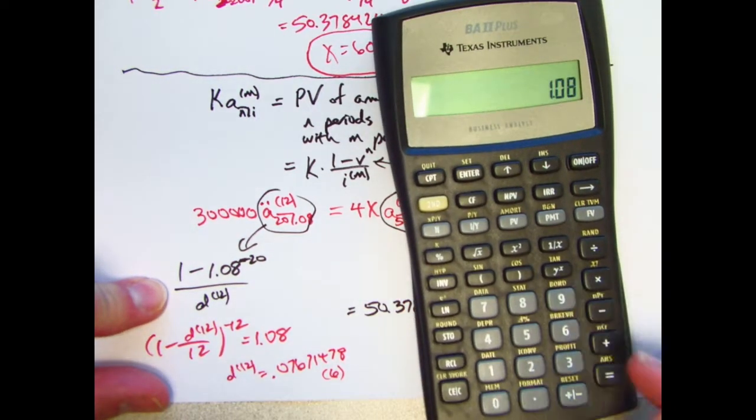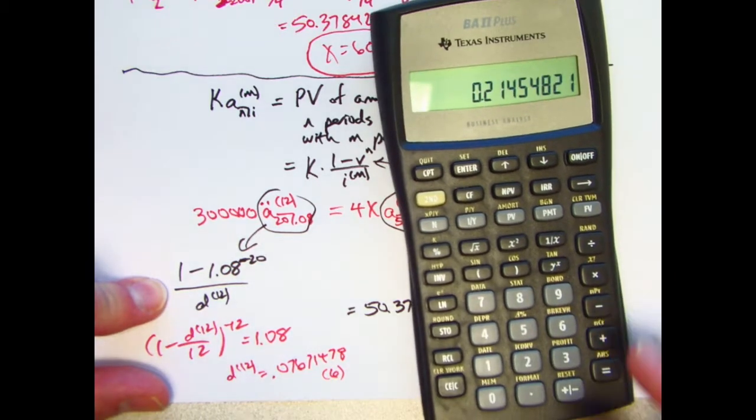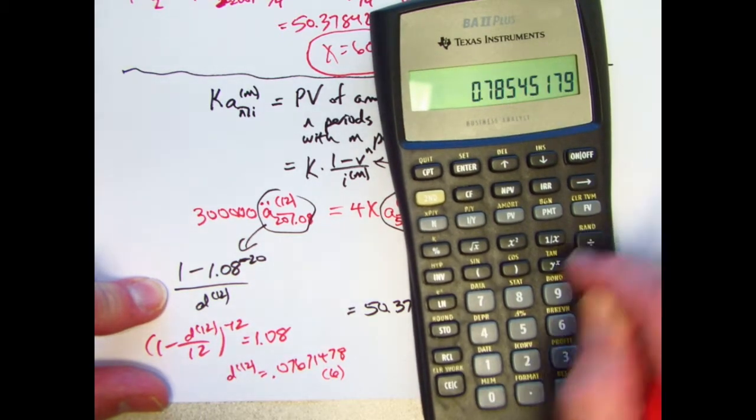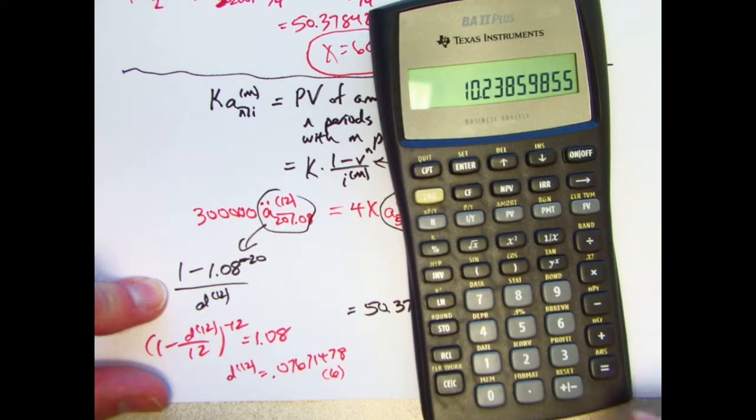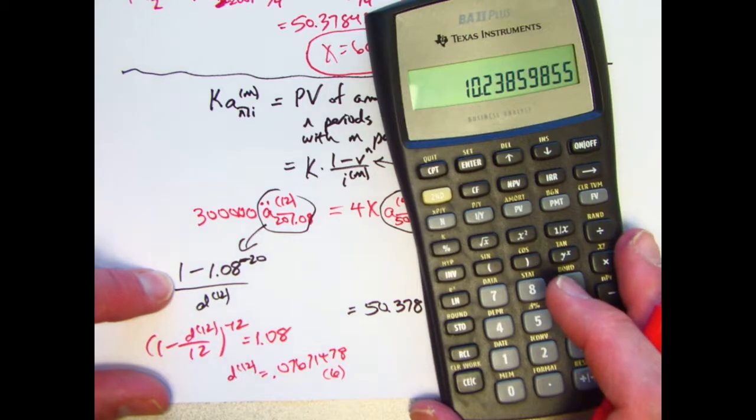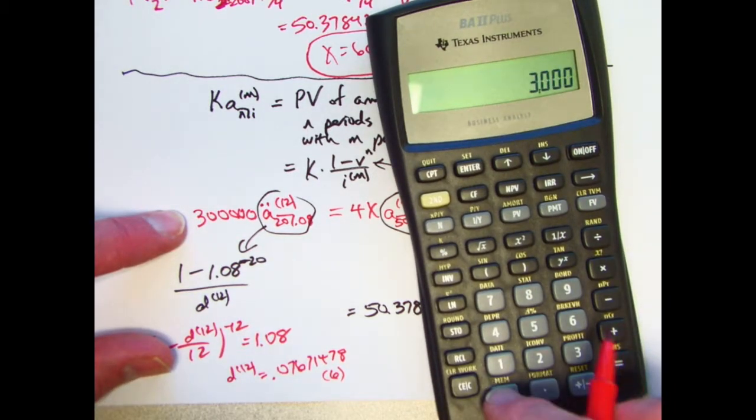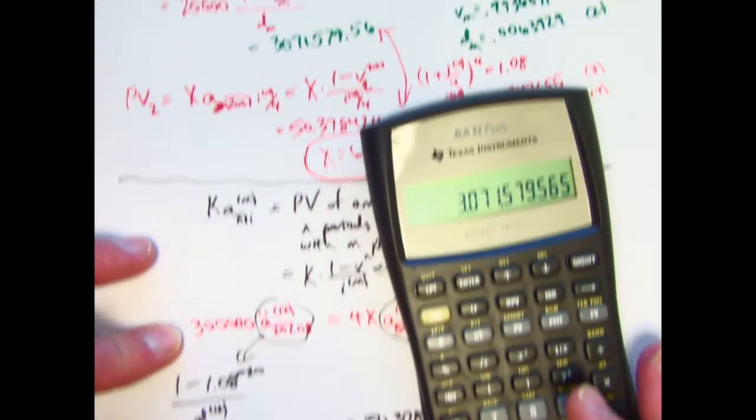Go back up here, 1.08 to the negative 20th power, subtract that from 1, divide by D12, and register 6. And this fraction is about 10.2386, then multiply it by 300,000. Looks good.